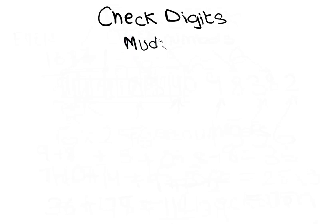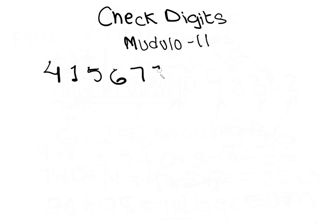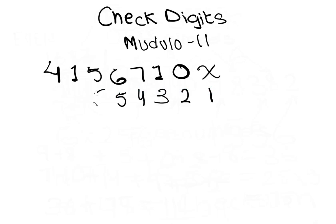The modulo 11 method can have varying lengths of number, which makes it suitable for many applications such as product codes or vehicle identification numbers. The first calculation is the generation of the check digit, and the second is the verification — a recalculation. Let's use a 7-digit number 4156710 as our example. We write x as a variable to represent the check digit. Now we start numbering the data from the right-hand side: 1, 2, 3, 4, 5, 6, 7, and 8.